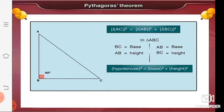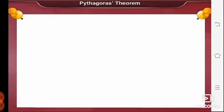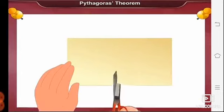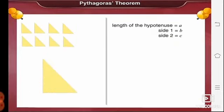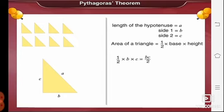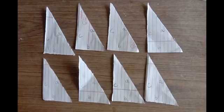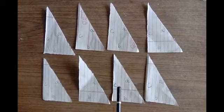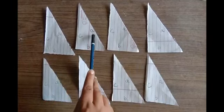Now let us verify Pythagoras theorem by following the steps given on page number 88. For this activity, we require a card sheet paper. From a card sheet paper, cut out 8 identical right angled triangles. Let the length of the hypotenuse of each triangle be 'a' units, and the sides forming the right angles be 'b' and 'c' units. The area of each triangle equals half times base times height, that is half × b × c = bc/2 square units.